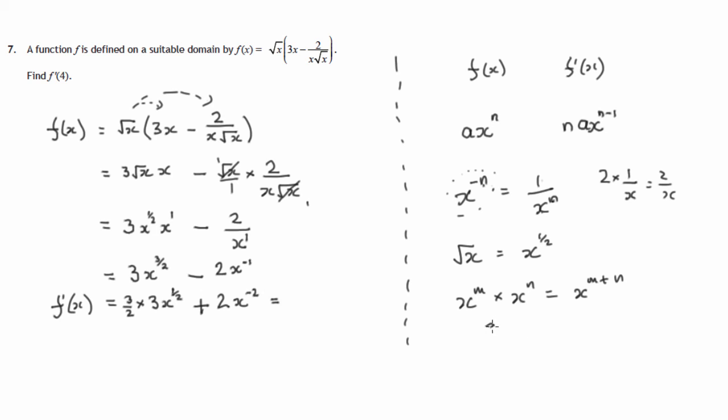3 over 2 times 3. Think of it as 3 over 1. Multiply the tops of the fractions, multiply the bottoms. So 9 over 2. x to the half is the square root of x. That's a better form to put it in if we're going to plug a value in. Plus 2.